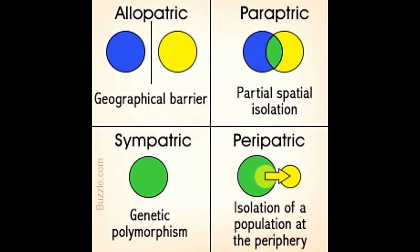An example is the formation of the Isthmus of Panama, which occurred about 3.5 million years ago and today separates the Caribbean Sea and the Pacific Ocean, leading to the formation of several new aquatic species. The formation of this land mass due to tectonic plate movements blocked the gene flow between populations of marine animals belonging to the same species.